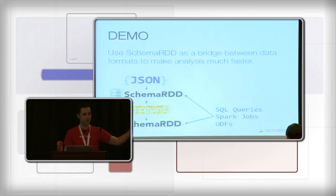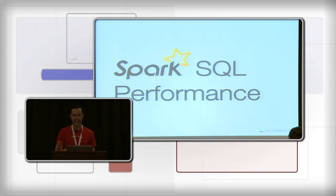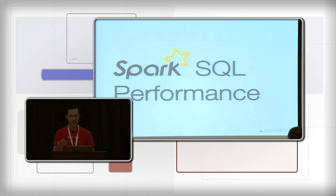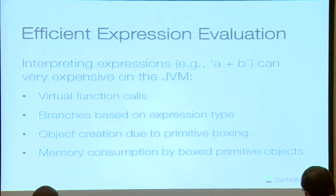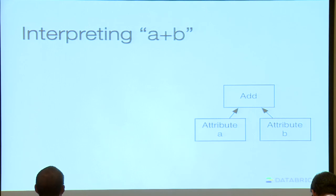In this demo I showed how you can take JSON and turn it into a schema RDD, convert schema RDDs into Parquet, turn those back into schema RDDs, and then execute SQL queries, Spark jobs, and UDFs against any of those. Now I want to talk about performance — it's not just about converting data into more efficient formats. We've been doing a lot of cool things with expression evaluation, and this is a preview of what's coming in 1.1.